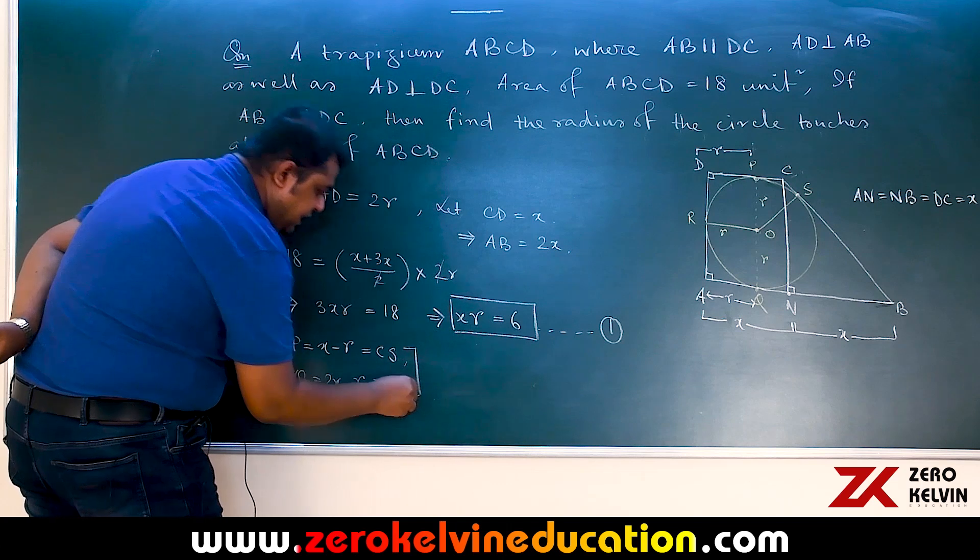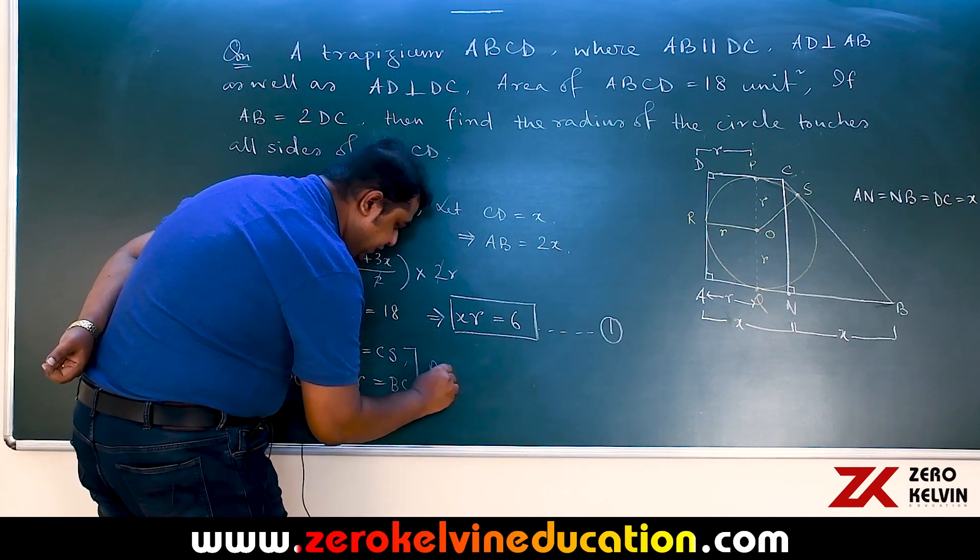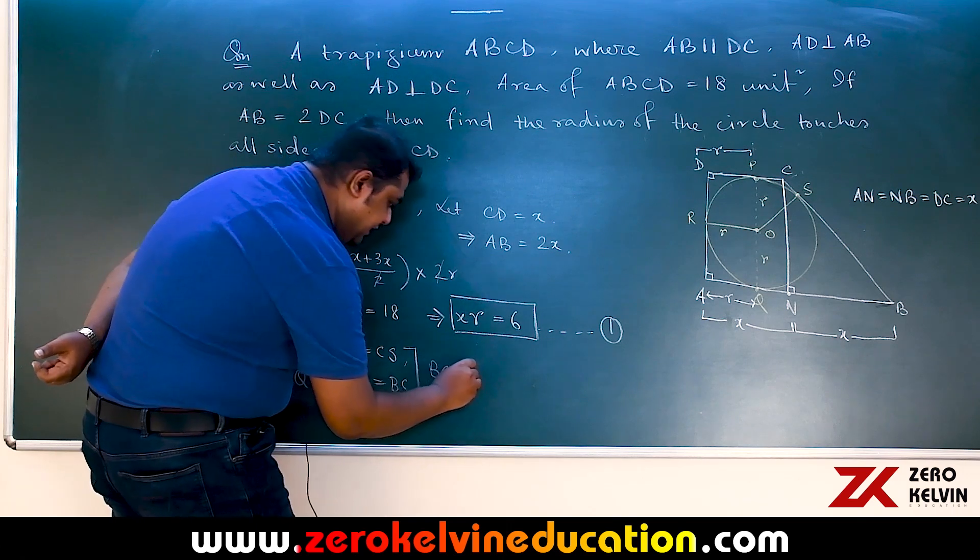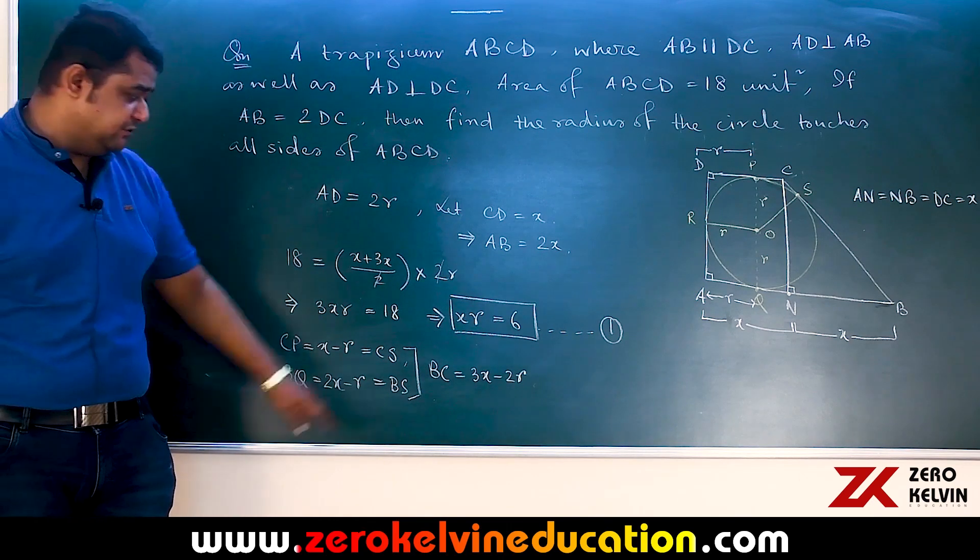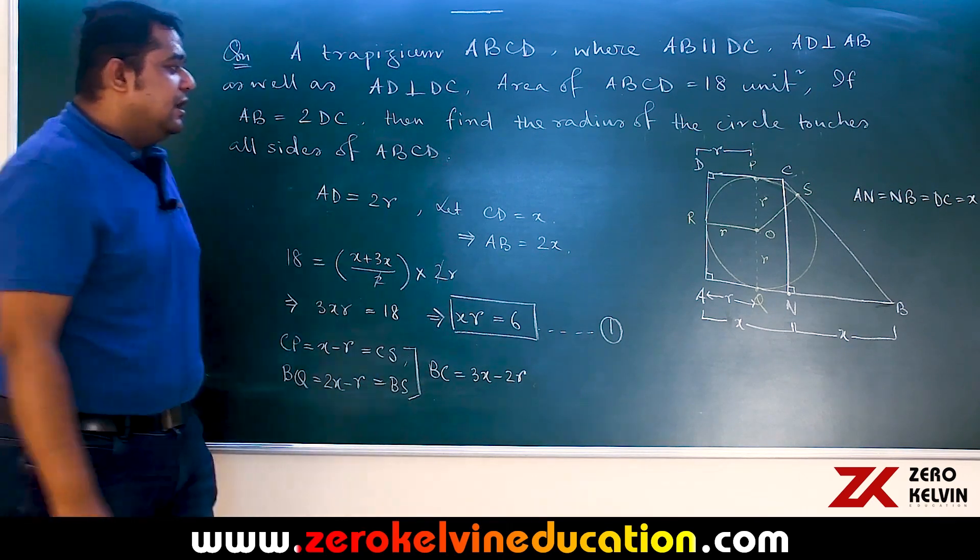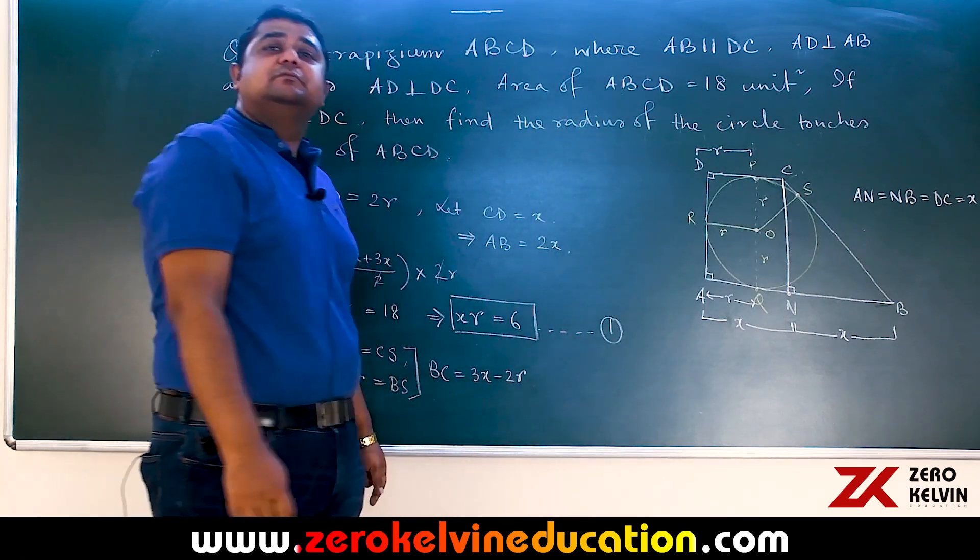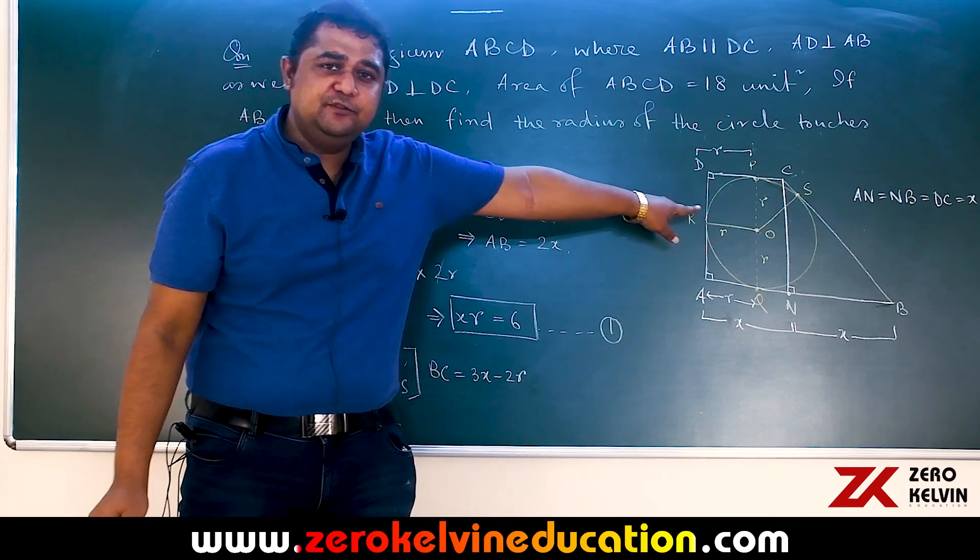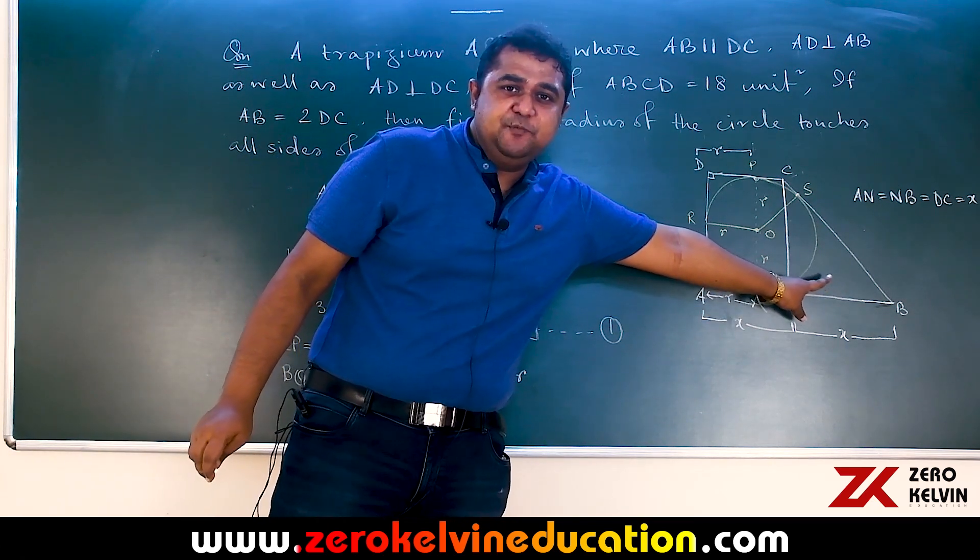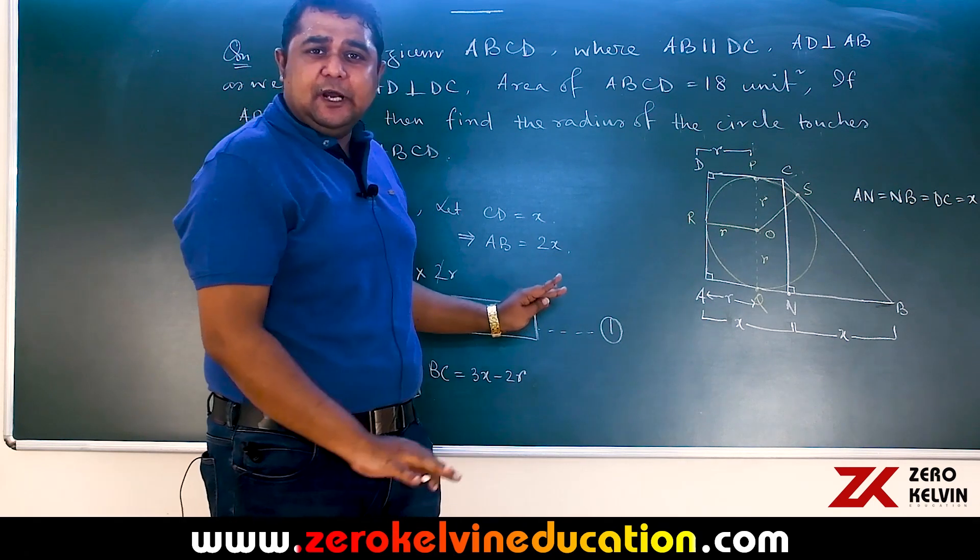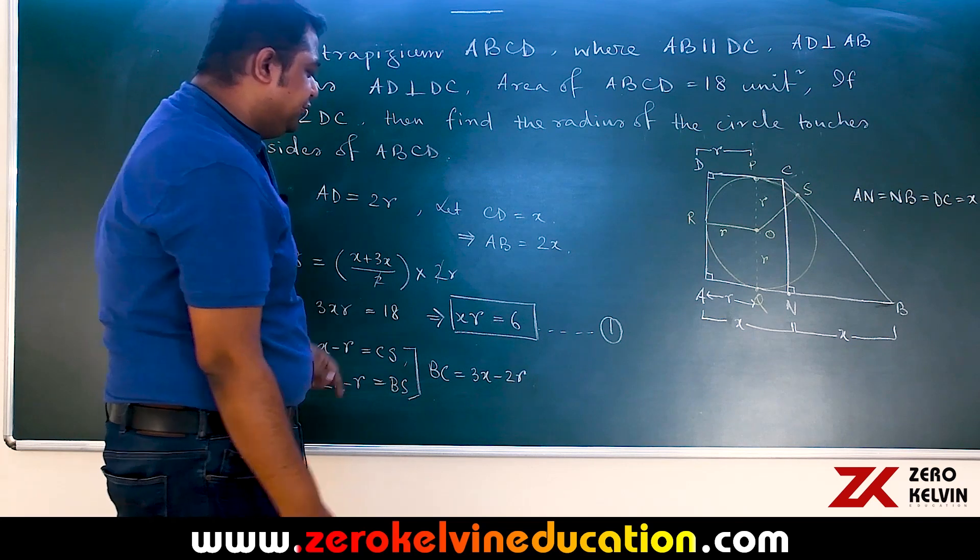Now if I add BS and CS that gives us BC as 3x minus 2R. We have added CS and BS to get this length. Now focus on this right triangle BCN. Over here BC is the hypotenuse, CN perpendicular and NB is the base and we all know Pythagorean theorem that base square plus perpendicular square is hypotenuse square.